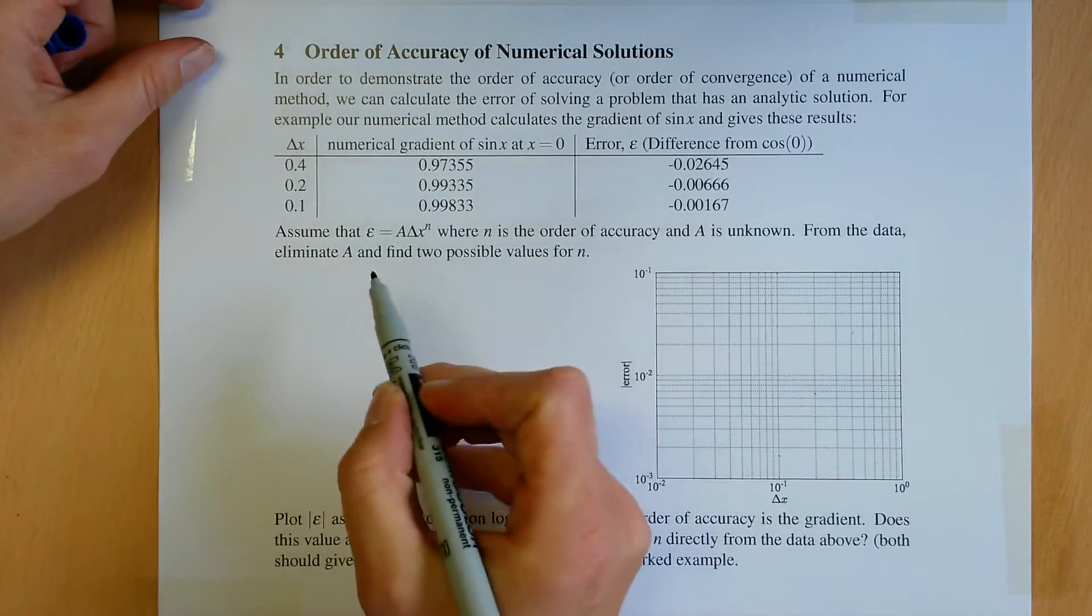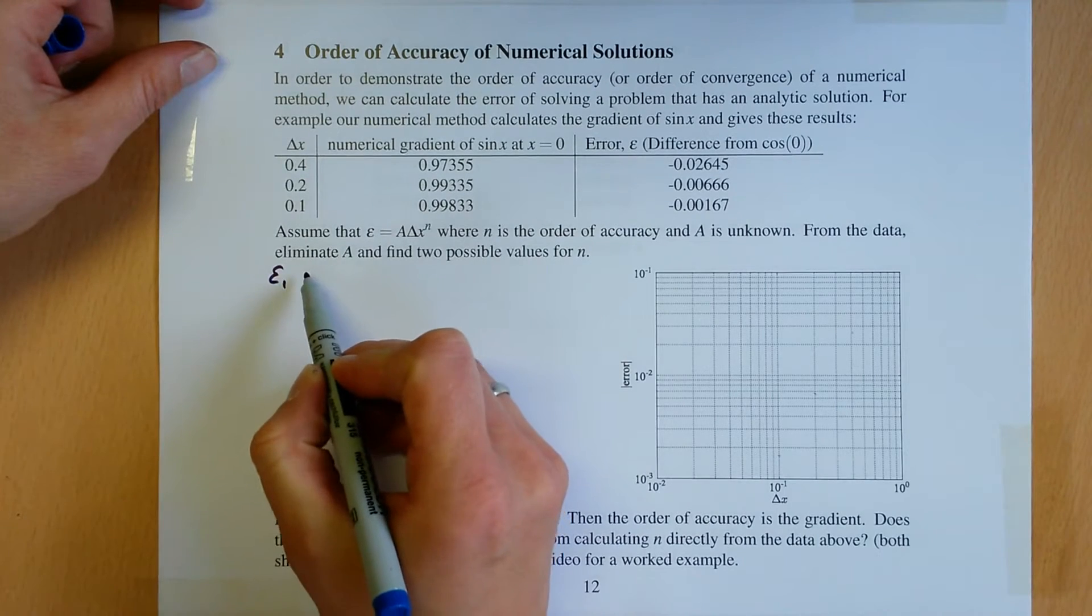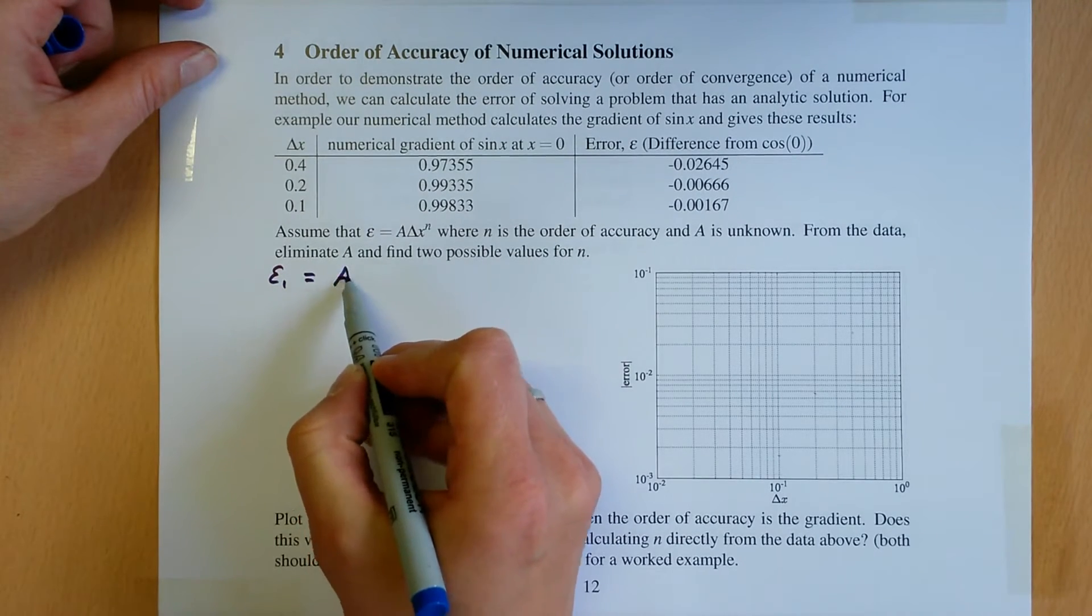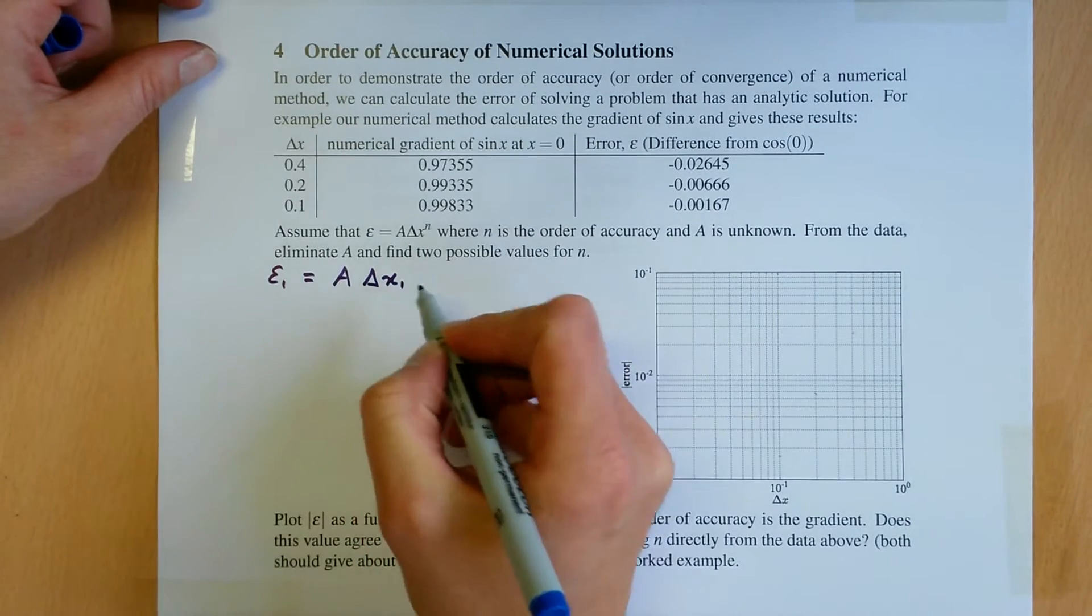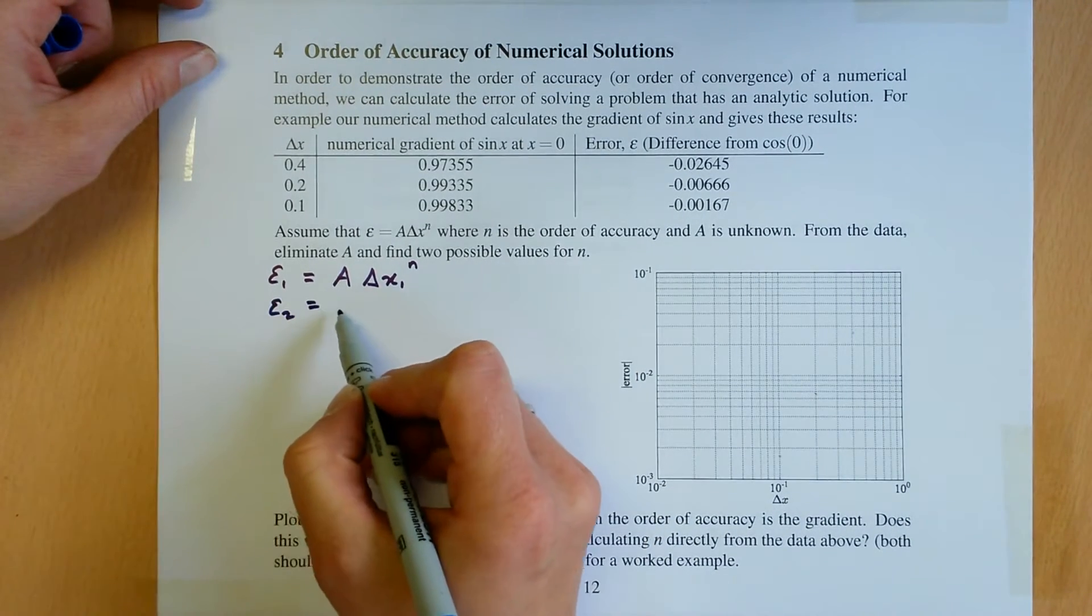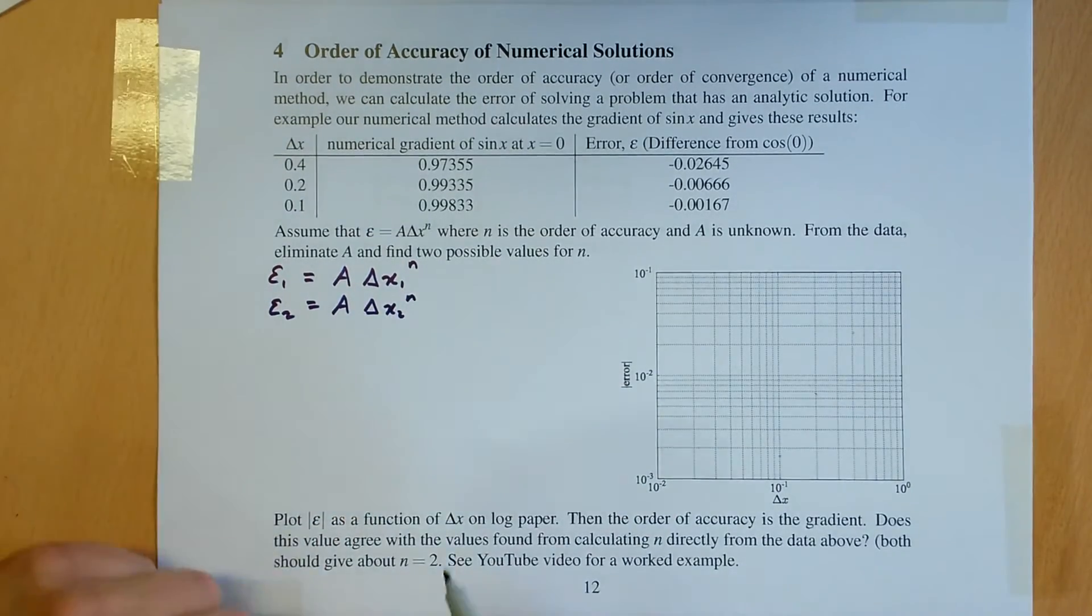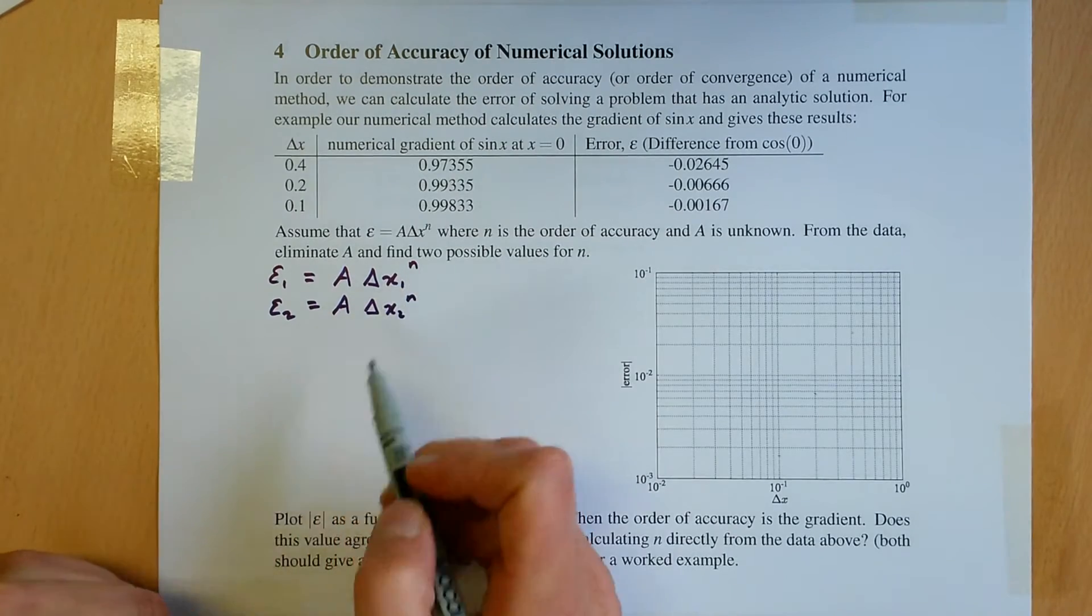We can write down, we can assume we've got two values, so we've got error 1 is equal to A times delta x1 to the power n, and error 2 is equal to A times delta x2 to the power n. Now we want to eliminate A in order to find n.